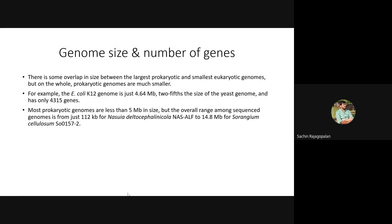The overall range can vary considerably — in some organisms it could be just 112 Kbps, and in some it could exceed 5 Mbps and reach 14.8 Mbps. Nasuia deltocephalonicola has 112 Kbps, the smallest known size, while Sorangium cellulosum has a very large size. Though the majority are in the range of less than 5 Mbps, there are exceptions.